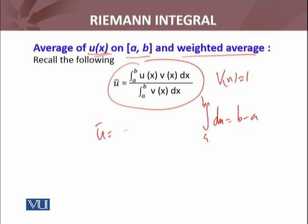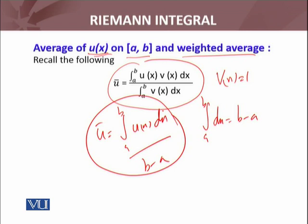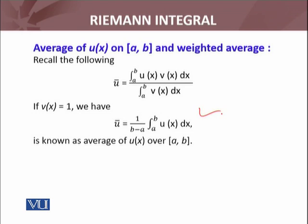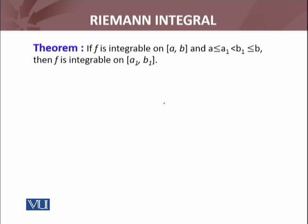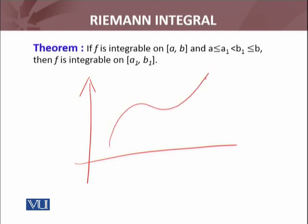u bar will become integral from a to b of u(x) dx over (b minus a). This is known as the average value of a real valued function u(x) on the closed interval [a, b]. This is known as the average value of u(x) over closed interval [a, b]. Weighted average value of u(x), see this one.